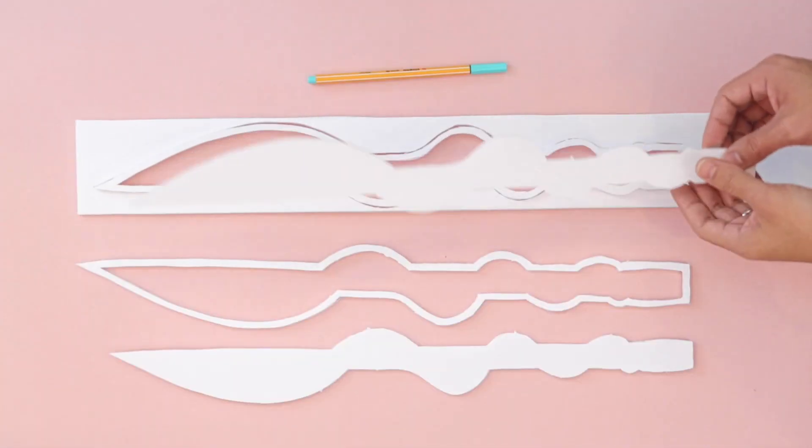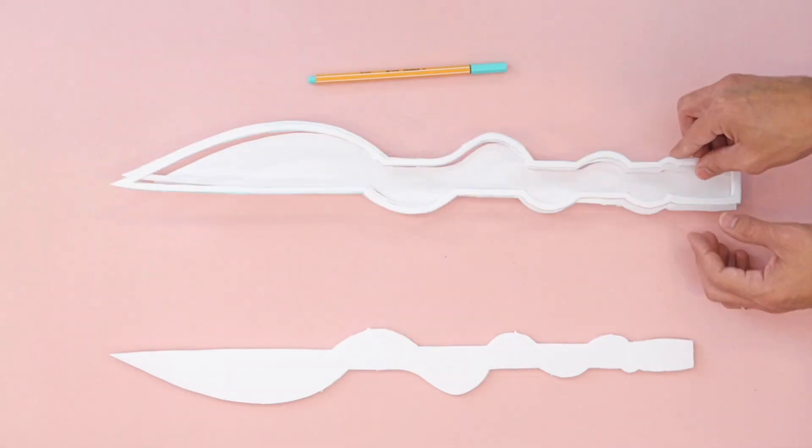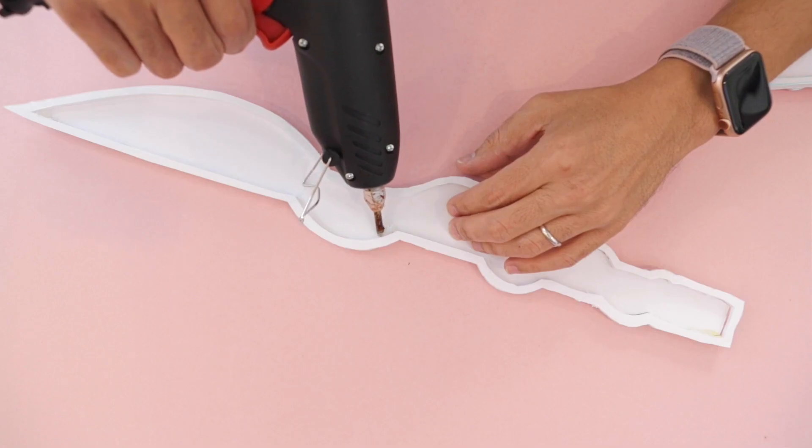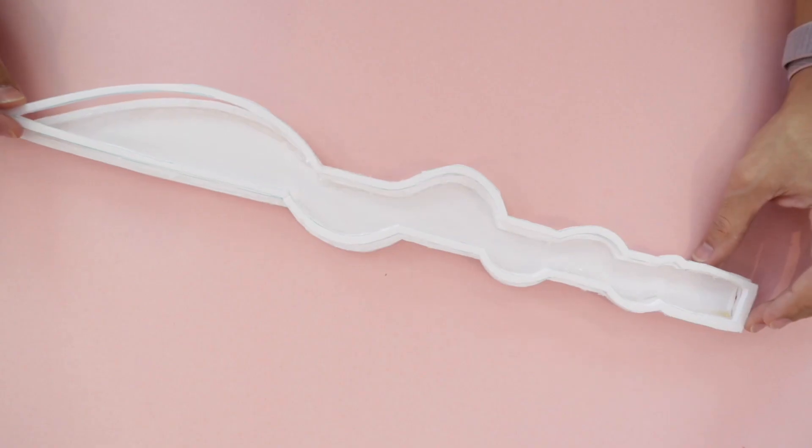Trace the template onto foam board and cut out the shapes with a hobby knife. These are layered together to form the blade. Use hot glue to bond the pieces together and create a sturdy frame.